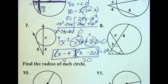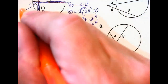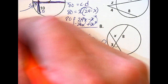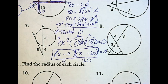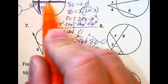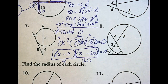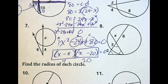Which answer makes sense in context? It has to be 4 — x cannot be 20 because the whole diameter is 24 and the radius is 12, so that little piece can't be bigger than the radius. So x equals 4.